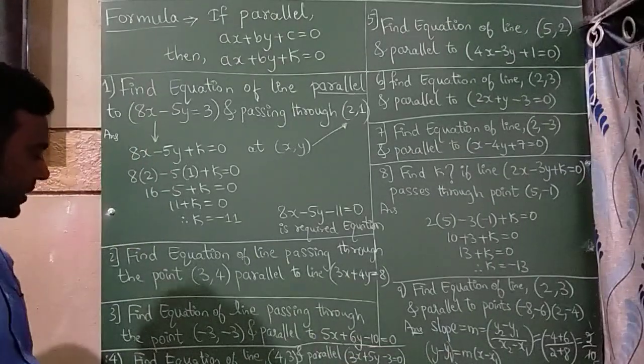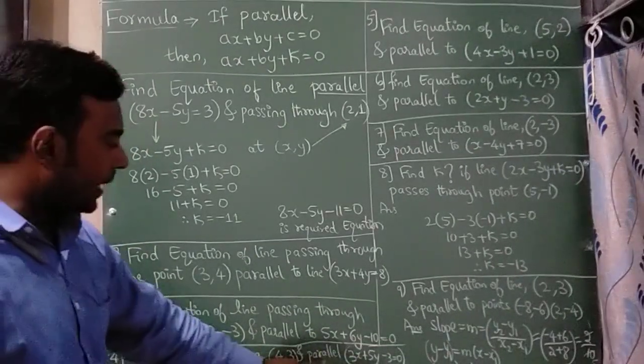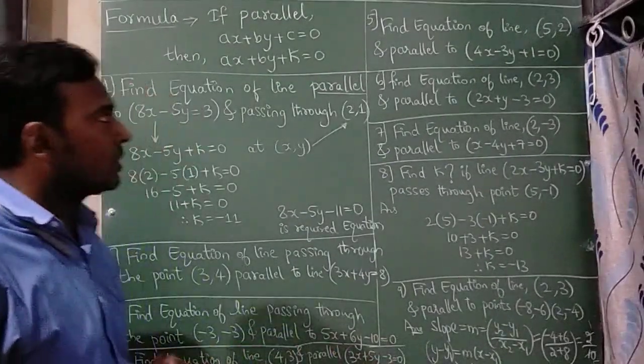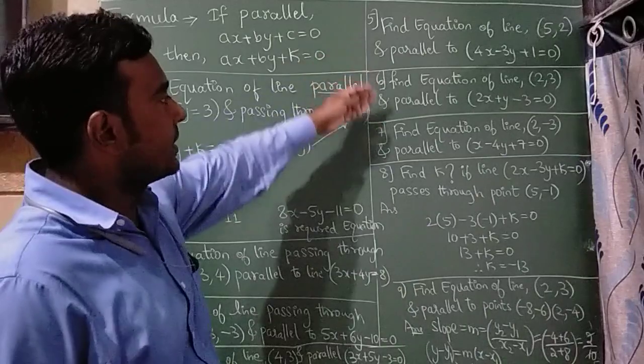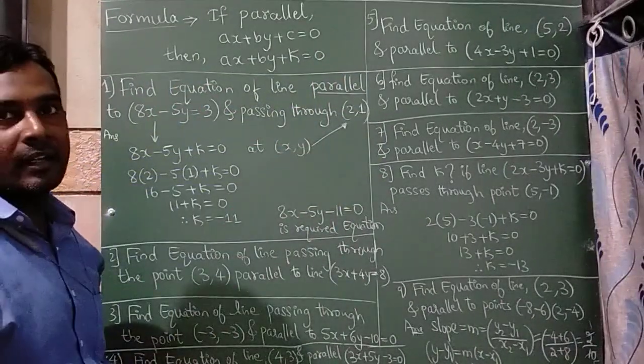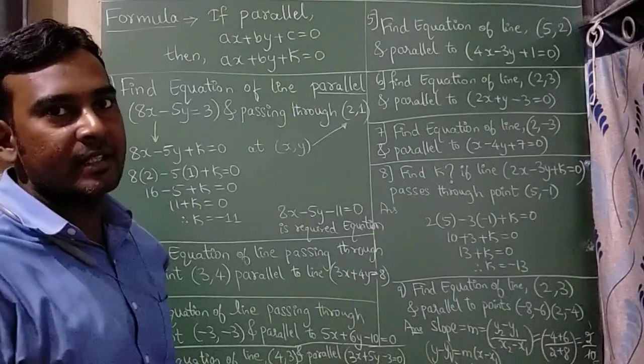And fourth question is find the equation of the line 4 comma 3 and parallel to the line 3x plus 5y minus 3 is equal to 0. And few more questions I have written here as per the formula solve this and let me see the answer in the comment section.